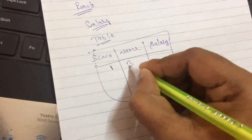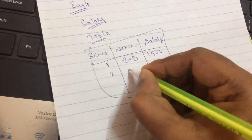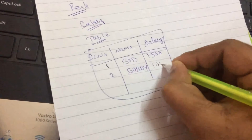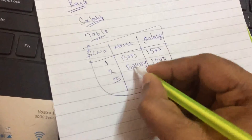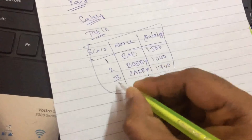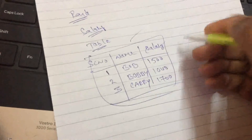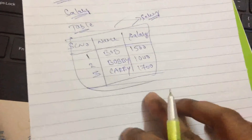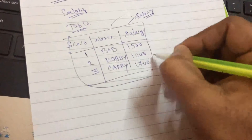In this table, record one: name is Bob, salary is 1500. Record two: name is Bobby, salary is 1000. Record three: name is Carry, salary is 1700. This is the table we have. We have to apply RANK on the salary column.